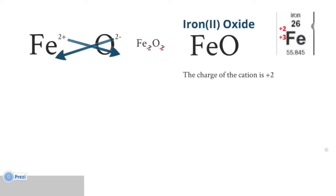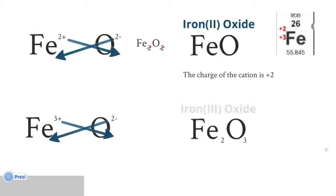Now what if we were looking at the iron with the charge of plus 3? When that combines with oxygen, we cross those charges and we get Fe₂O₃. This will be called iron Roman numeral 3 oxide because the charge of the iron cation is plus 3.